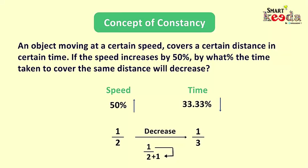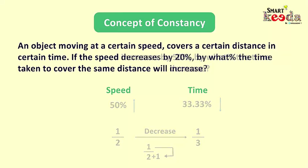Let's take the opposite scenario here. Let's say speed of this object decreases by 20%, and now we are required to find the proportional increase in time to cover the same distance. Let's once again note down the fraction value of the given percentage, which will be 1 by 5.